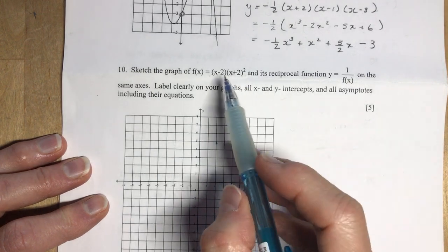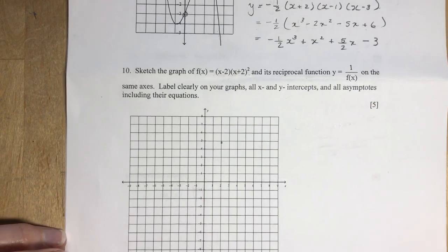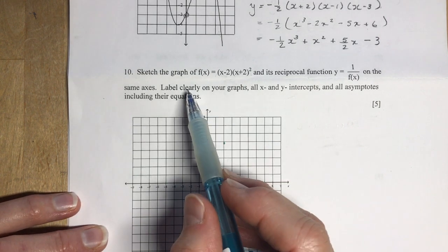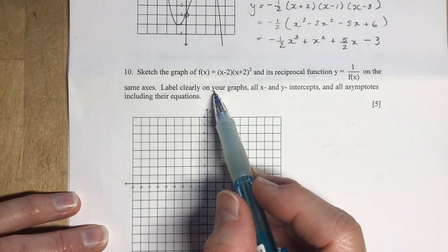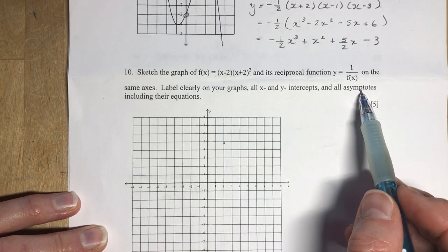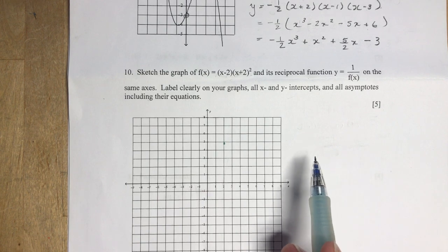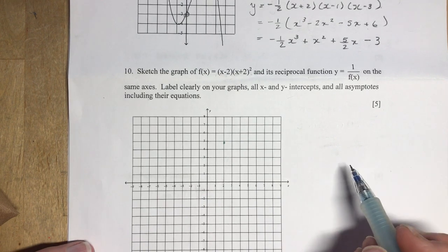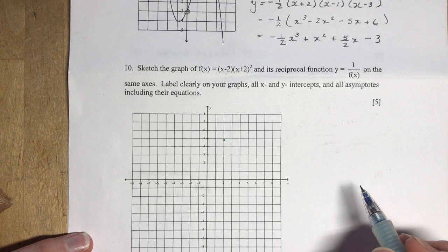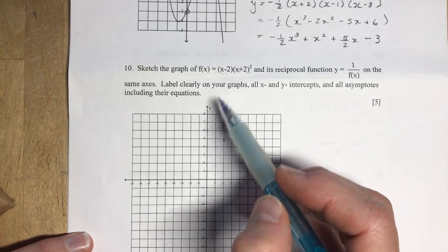Number ten. Sketch the graph of f(x) and its reciprocal function on the same axis. Clearly label on your graph. Make sure you read this. Label on your graphs all x and y intercepts, all asymptotes including their equations. Don't change yourself on marks because you didn't spend the time to write those out.